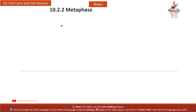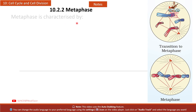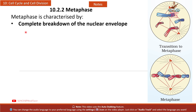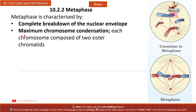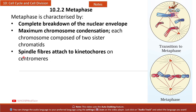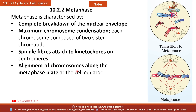10.2.2 Metaphase: Metaphase is characterized by complete breakdown of the nuclear envelope, maximum chromosome condensation, each chromosome composed of two sister chromatids, spindle fibers attached to kinetochores on centromeres, and alignment of chromosomes along the metaphase plate at the cell equator.